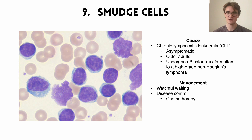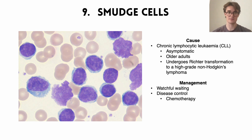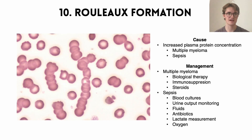The key thing to worry about with CLL is the Richter transformation, where a fairly benign CLL can randomly convert to a high-grade aggressive non-Hodgkin's lymphoma — something to watch out for. Management is normally watchful waiting; if disease is worsening and causing symptoms, some chemotherapy can knock down disease activity. If Richter transformation occurs, much more intensive treatment is considered.